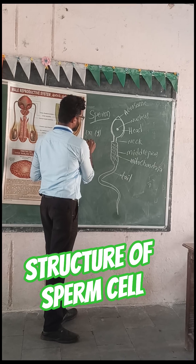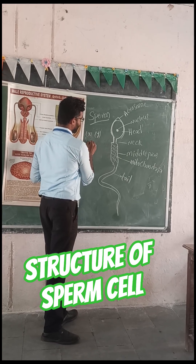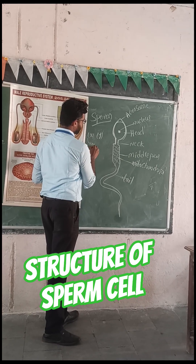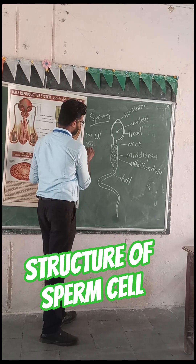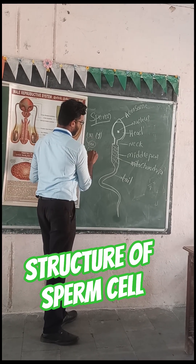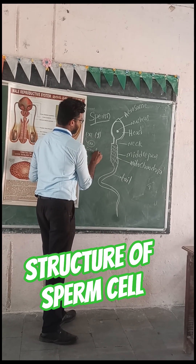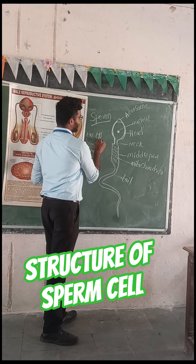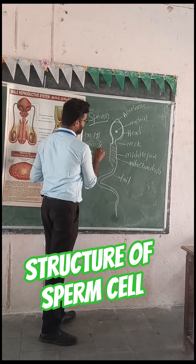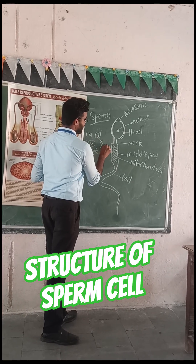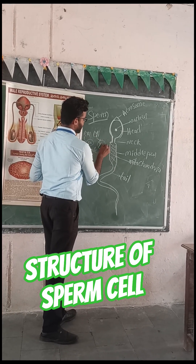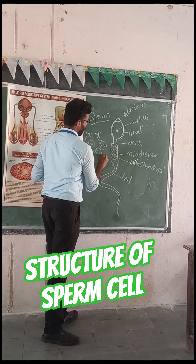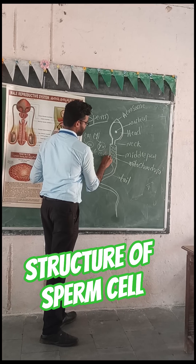When X chromosome sperm is combined with the ovule, they create an XX — it is called female. And when Y chromosome sperm is combined with the female X ovule, a boy, a male, is created.